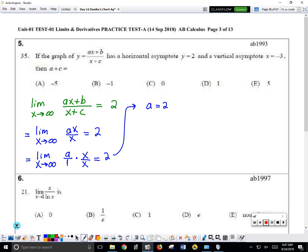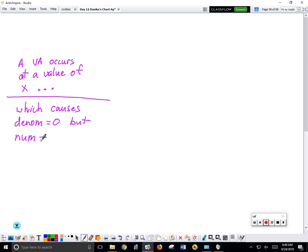Isn't that like the bottom you plug in negative for x? Yeah, so you need a flashcard that says something like this. A vertical asymptote occurs at a value of x, dot dot dot. Flip the card over: which causes denominator to equal 0, but numerator to not equal 0.